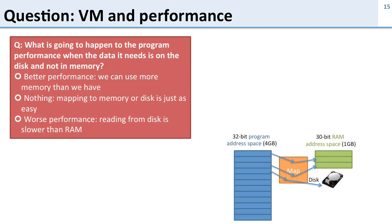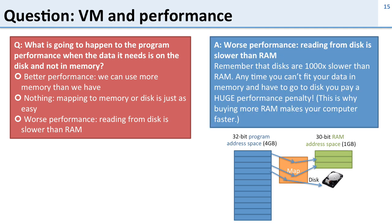Here's a question about virtual memory performance. What's going to happen to the program performance when the data it needs is on the disk? We're going to get really bad performance. Reading from disks is slow — disks are thousands of times slower than memory. So if we have to put the data on the disk, it's going to slow down our performance enormously. This is why people tell you if you buy more memory for your computer, it'll run faster, because you'll have less time you have to go to the disk to access data.